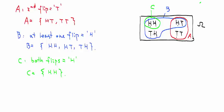Now let's continue with our two coin flip example. We have defined three events. Each event is a subset of outcomes.